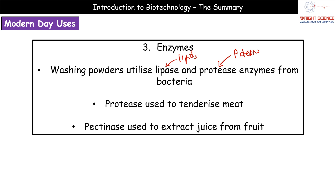In an overlap between the food and enzyme industries, when we want to extract juice from fruits we can use an enzyme called pectinase. Pectinase acts on a substance called pectin, making the juice much easier to extract.